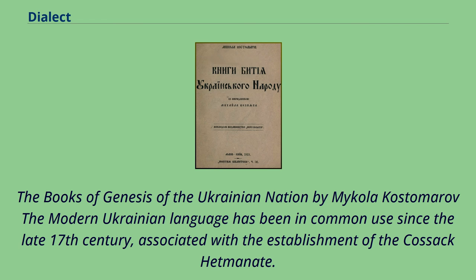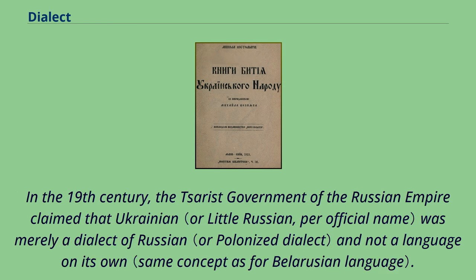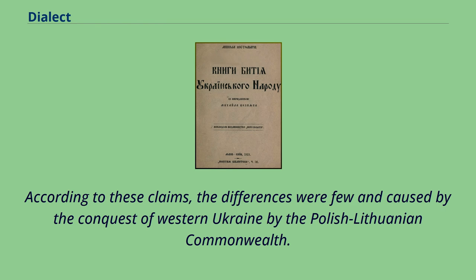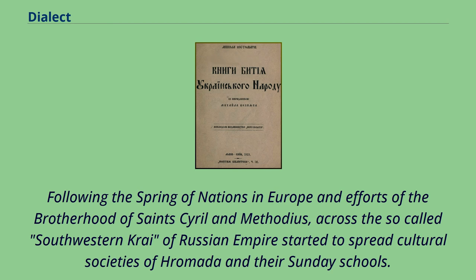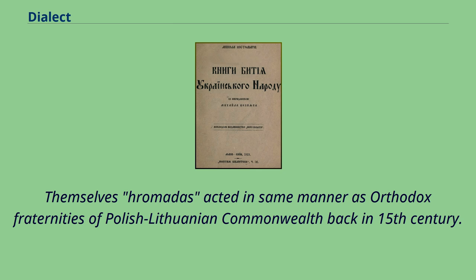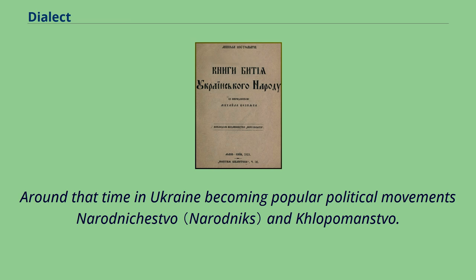The modern Ukrainian language has been in common use since the late 17th century, associated with the establishment of the Cossack Hetmanate. In the 19th century, the Tsarist government of the Russian Empire claimed that Ukrainian was merely a dialect of Russian, arguing that differences were few and caused by the conquest of western Ukraine by the Polish-Lithuanian Commonwealth. However, in reality the dialects in Ukraine were developing independently from those in modern Russia for several centuries and differed substantially. Following the Spring of Nations in Europe and efforts of the Brotherhood of Saints Cyril and Methodius, cultural societies called Hromadas and their Sunday schools spread across the southwestern part of the Russian Empire.